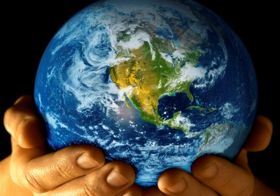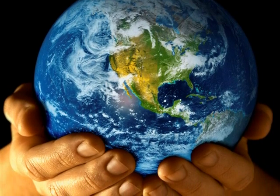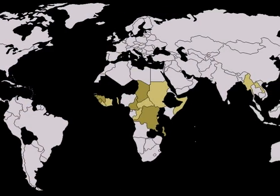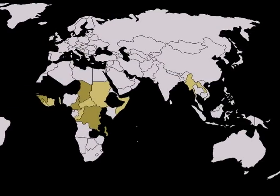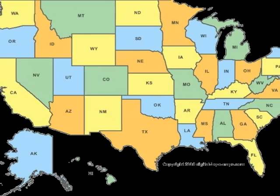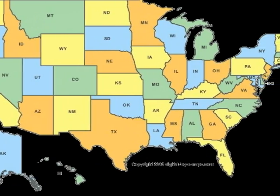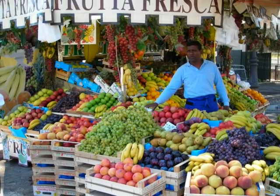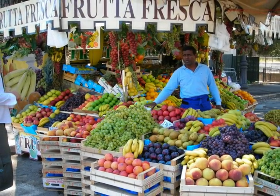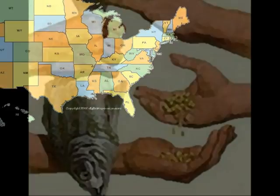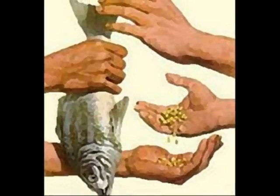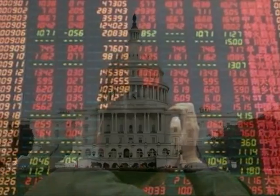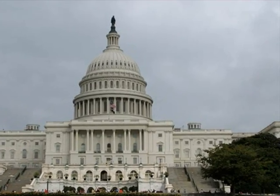Microloans are small loans given with little to no interest to small enterprises in developing countries. They are used to spur economic growth and vitality in the world's poorest countries as well as promote small businesses in the United States. The principles covered in this video are that people respond to incentives, trade can make everyone better off, markets are usually a good way to organize economic activity, government can sometimes improve market outcomes, and the idea of opportunity cost.